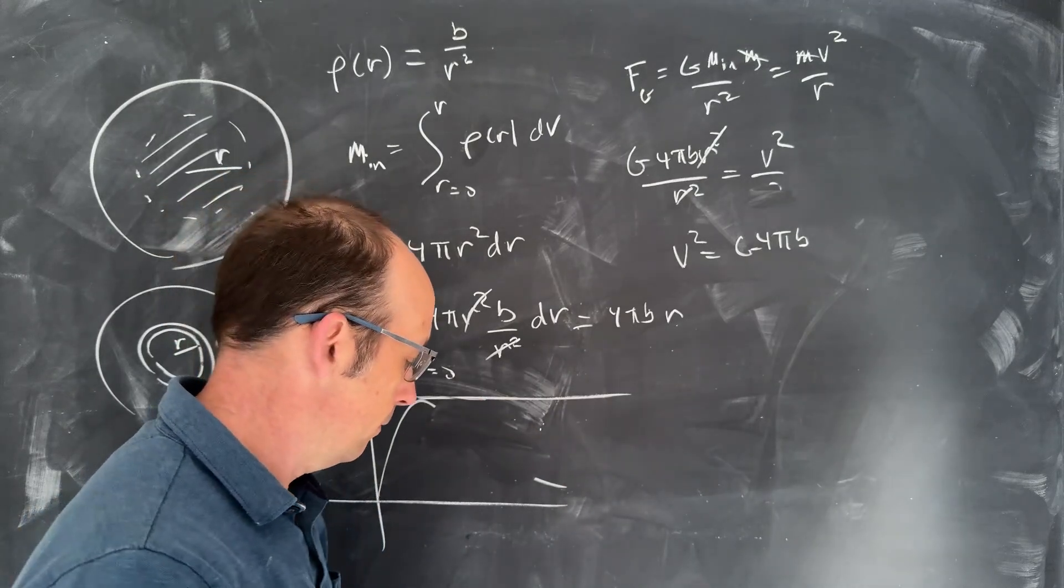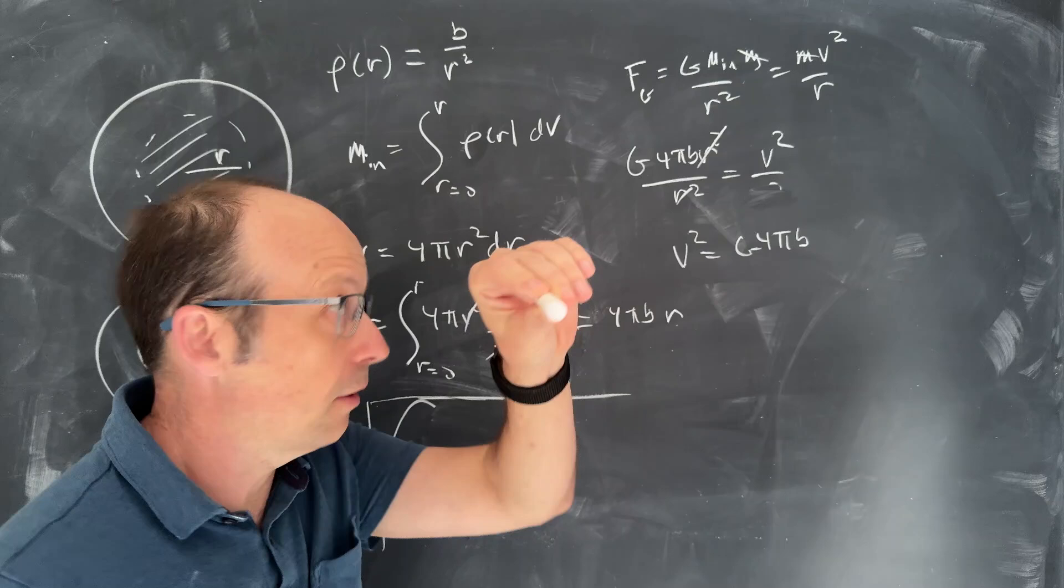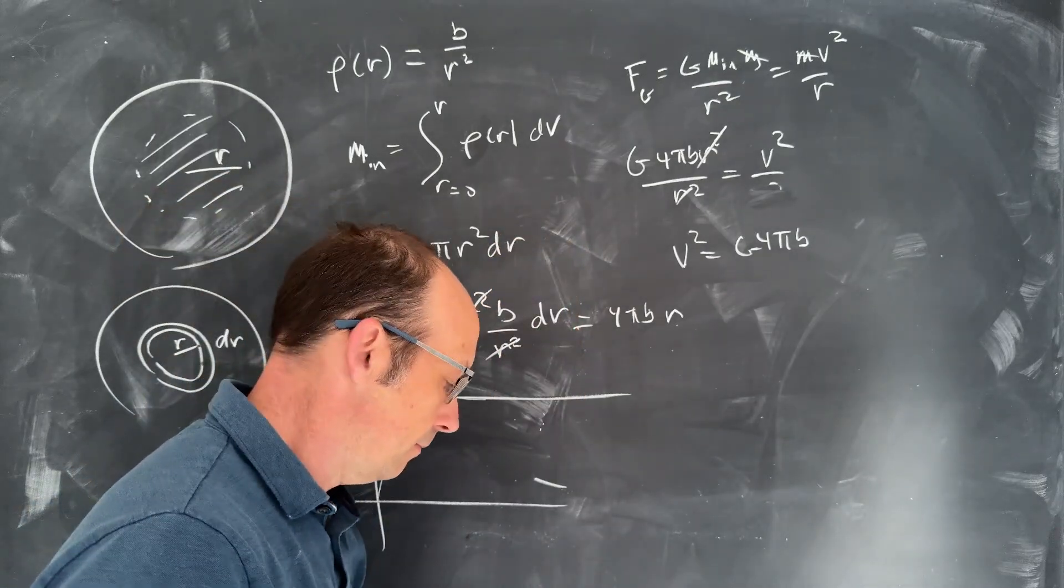So there you go. Flat rotation curves, dark matter, density function. The end.